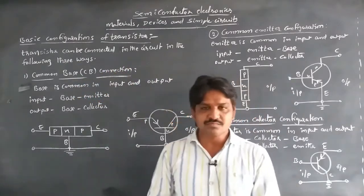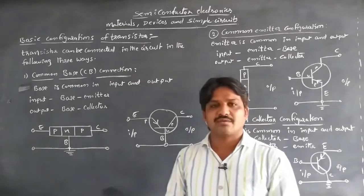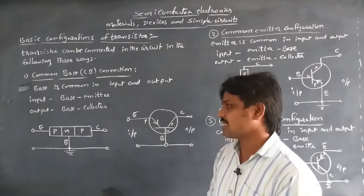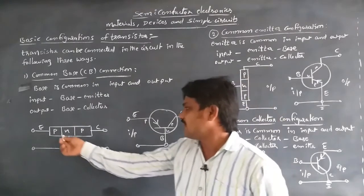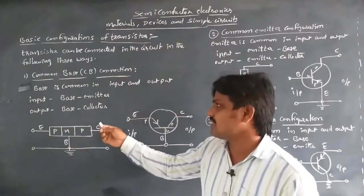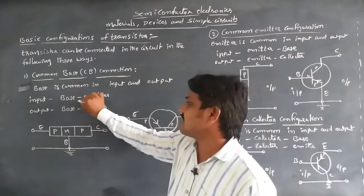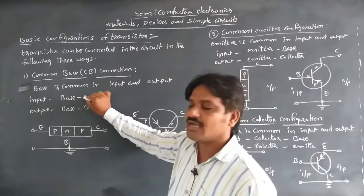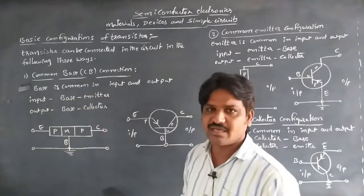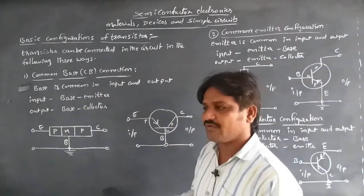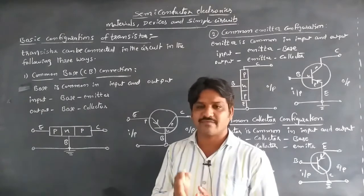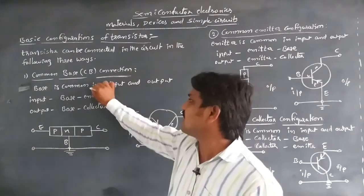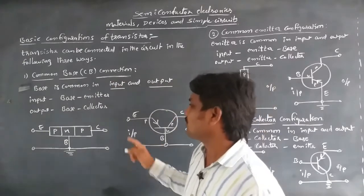In the transistor we have three terminals: emitter, base, and collector. In the common base configuration using a PNP transistor, the emitter-base junction is considered the input and the base-collector junction is the output, because the base is commonly connected for both input and output.